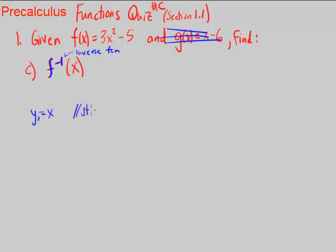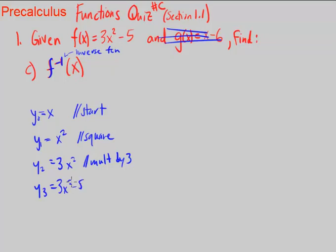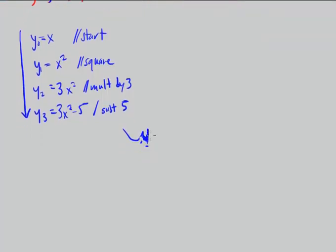So we know we start with y = x. That's where we start. And then what do we do next to create this function? Well, our next step would be to square x. Our next step after that is to multiply it by 3. And our final step is to subtract 5. Right, we're just subtracting 5 from what's above. Okay. So that's how our function f was created.